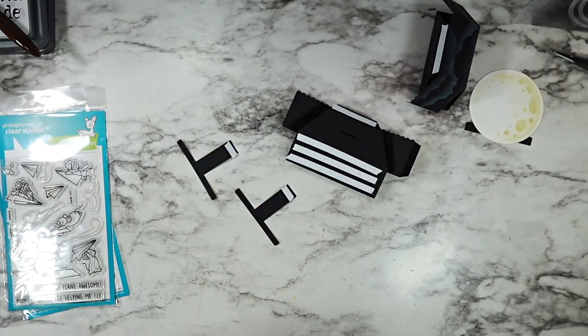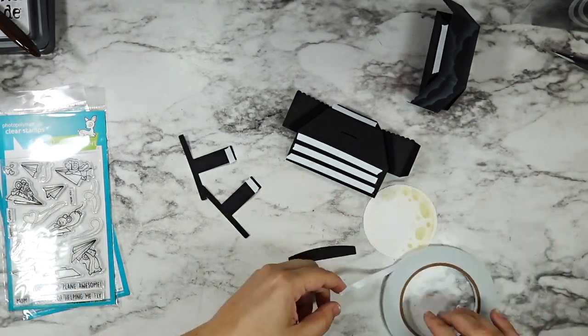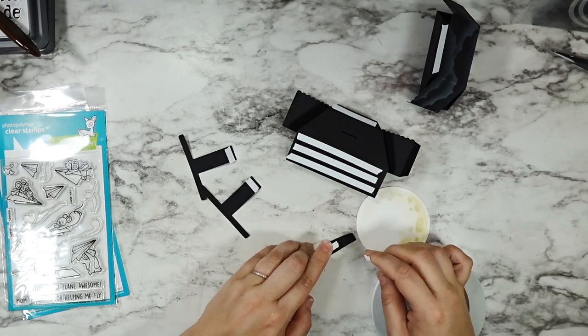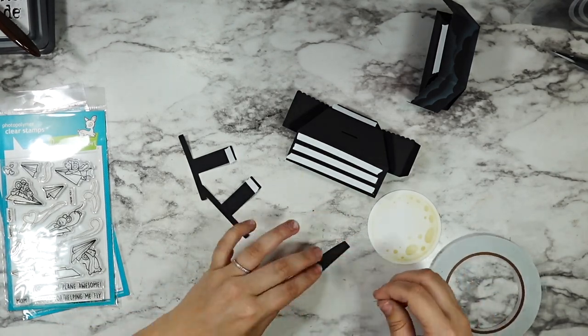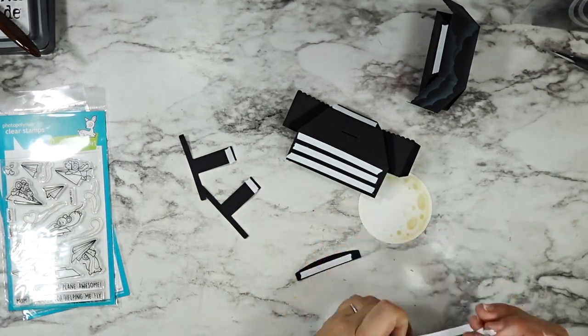So once you have your tape in place, I also adhered my moon with some tape just because I thought it would be less messy than trying to use liquid glue. And this little hill I'm going to be adding to one of those tee pieces.